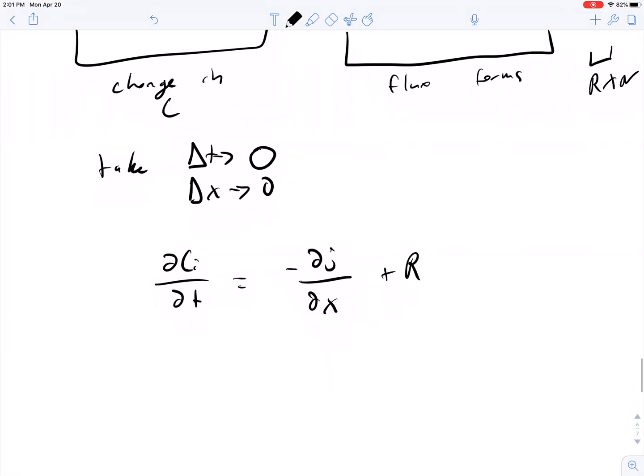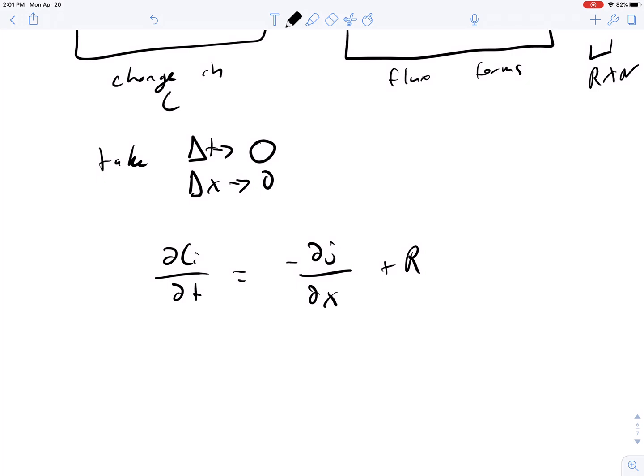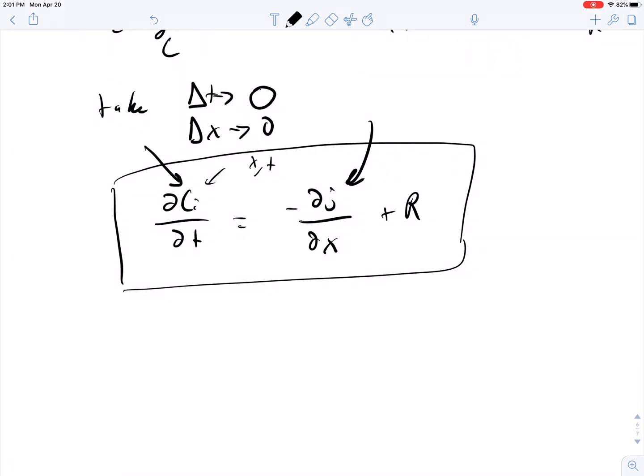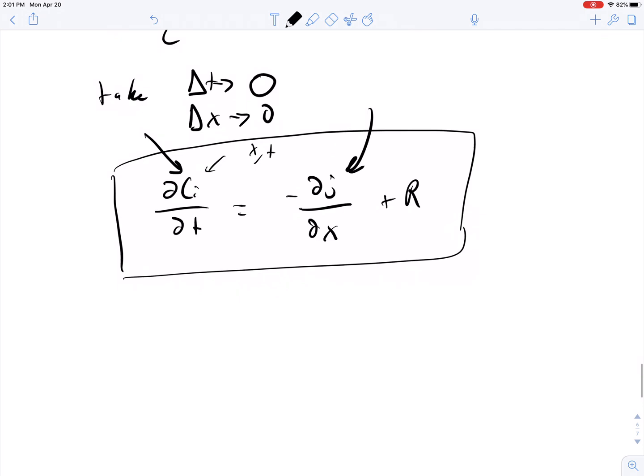And of course it's a partial differential equation because this depends on both X and T. Now if you look at this equation, we have one equation with two independent variables, X and T, and two dependent variables, J and C I. So we're again going to need some sort of relationship that brings J in connection to our concentration variable.